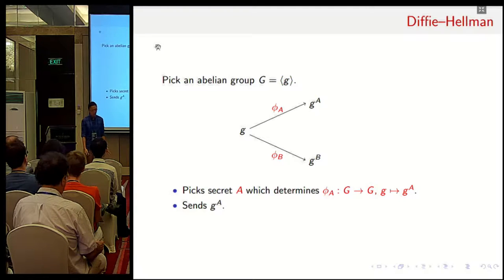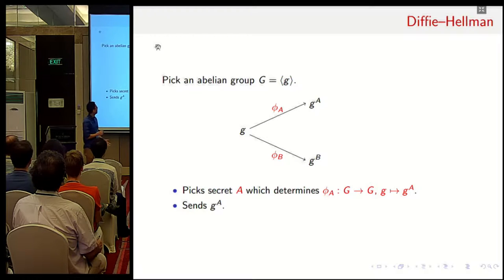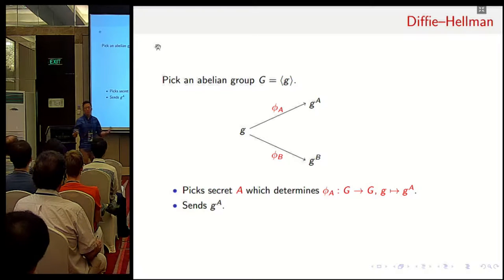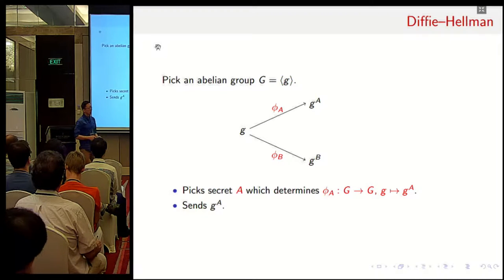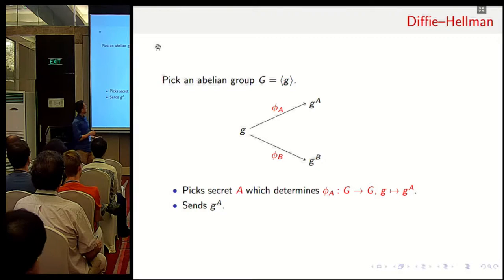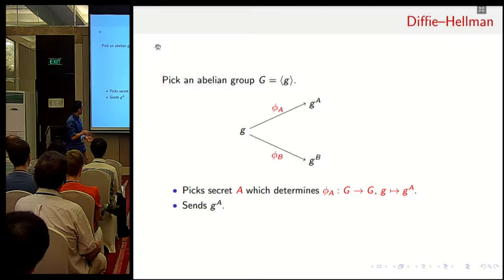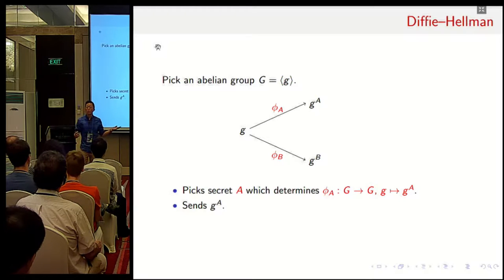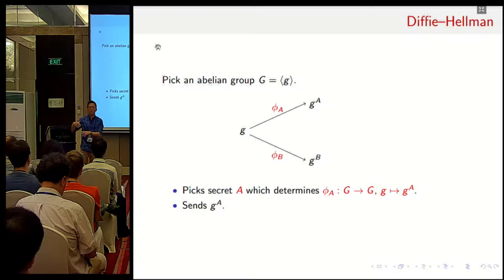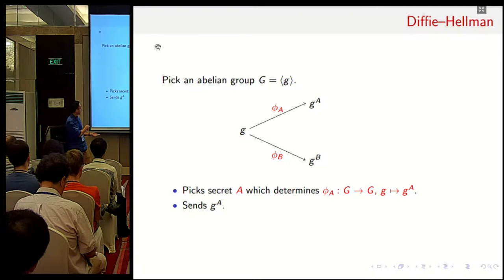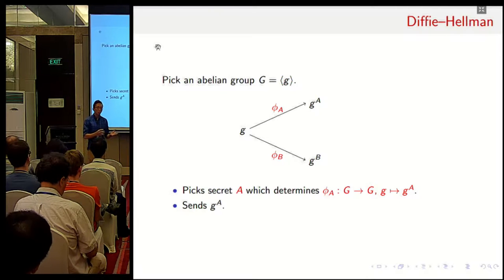So we have the Diffie-Hellman cryptosystem, or rather the exchange scheme. So you have a subgroup G, or maybe a larger group, and we're looking at this small little generator, this generator small g, that would generate big G over here. So what Alice does to try to get a shared secret with Bob is that she picks a secret A. And from what you saw just now, you just raise small g to A, and that's your public key. But you can think of it slightly differently. You can think of picking A as picking a secret homomorphism.